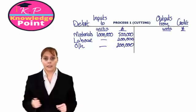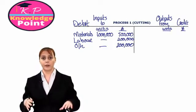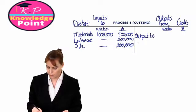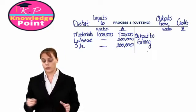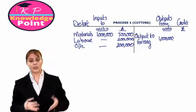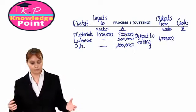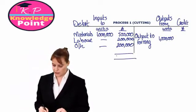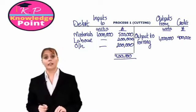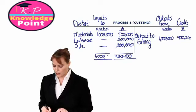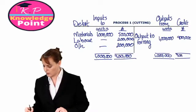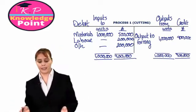Those are all our inputs to the cutting process. After we've done all this work on these units of material, they will be output to forming. So we are outputting one million units, and the value of those units is the total amount spent on them so far. Adding up our input costs gives us 900,000, so that is the value of our output. Both our unit values and our monetary values must balance, and that completes our process account for the cutting process.